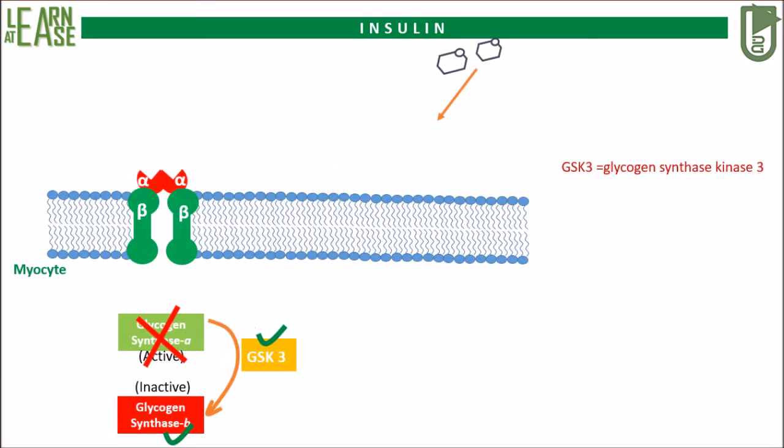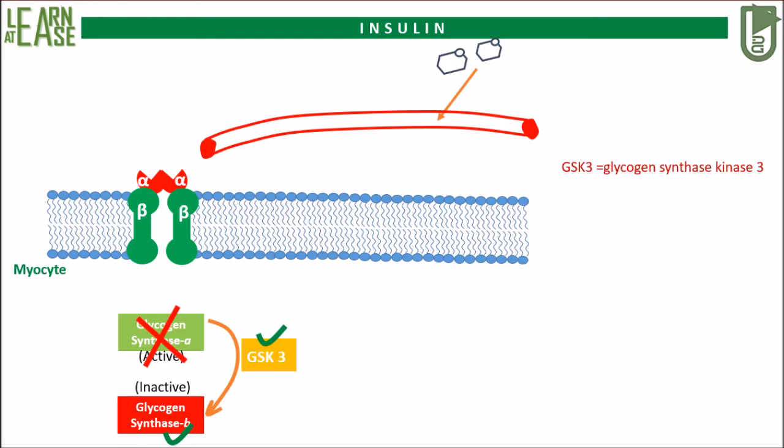When a person consumes glucose, it enters the blood and circulates throughout the body. This activates beta cells of the islets of Langerhans of the pancreas to release insulin into the blood.